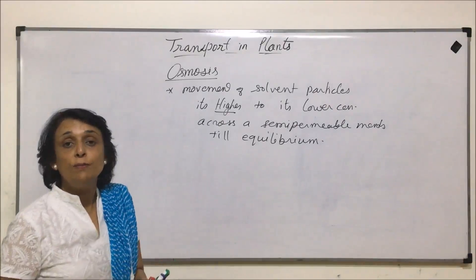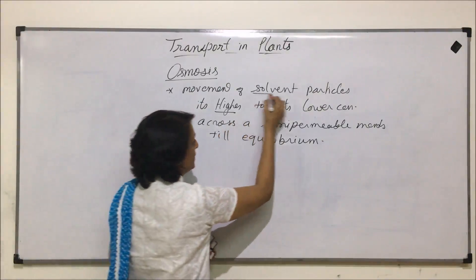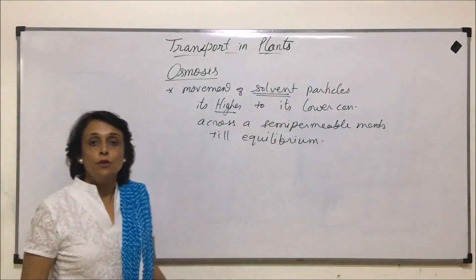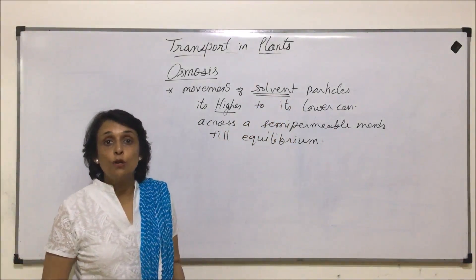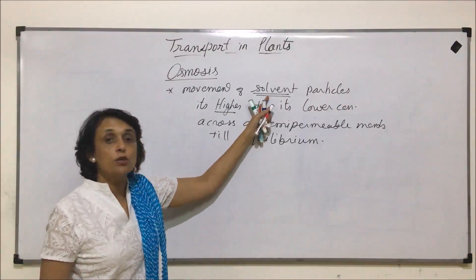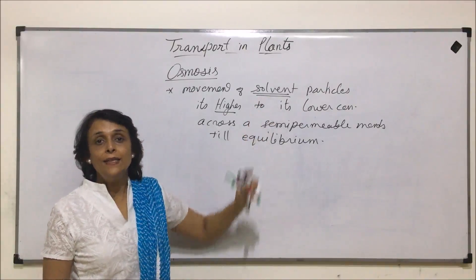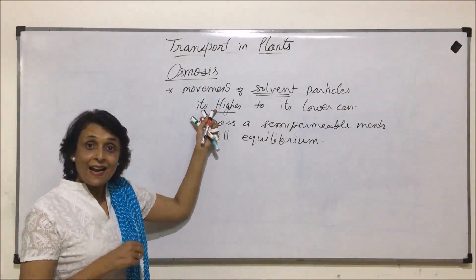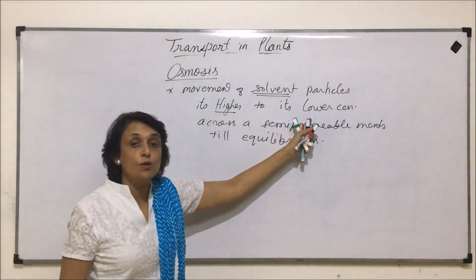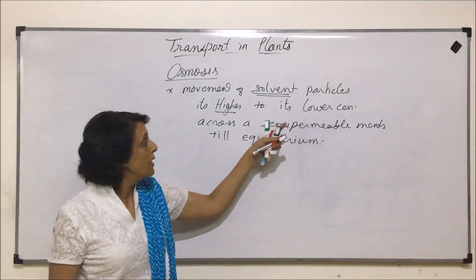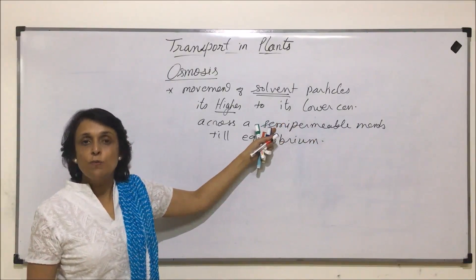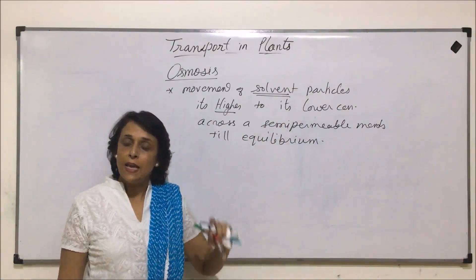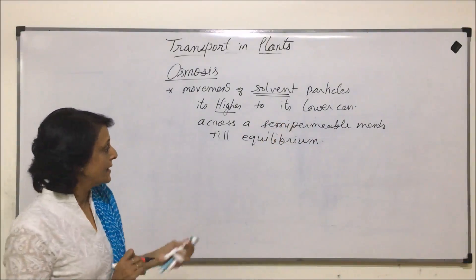Here we are talking of movement of solvent particles. In diffusion and facilitated diffusion, we talked about movement of solute particles. Here it is solvent particles, and these solvent particles move from a region of their higher concentration to a region of their lower concentration. The membrane is also important here, and this movement will take place till it reaches equilibrium.